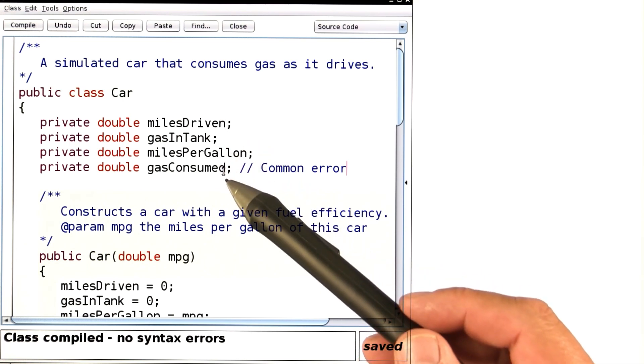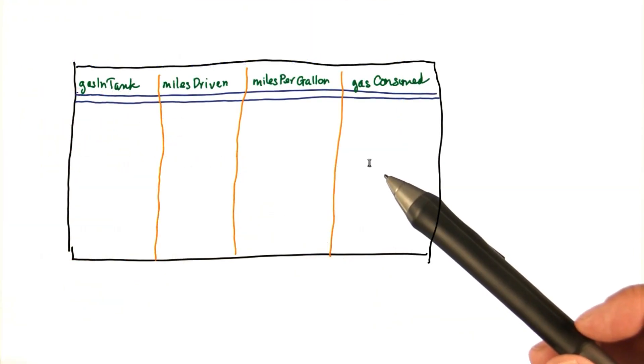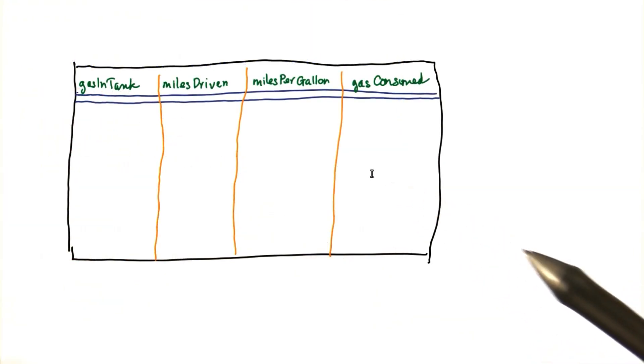Note that this class now has four instance variables. Here they are on an index card. And now let's quickly run through the same scenario that we had previously.